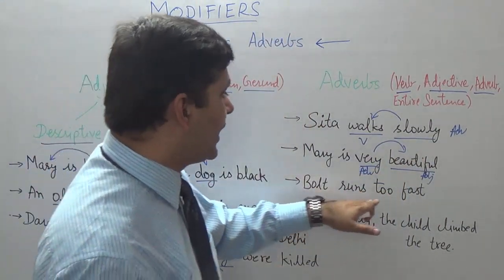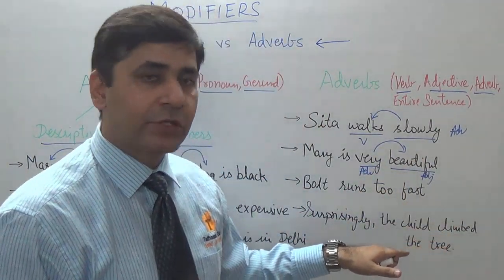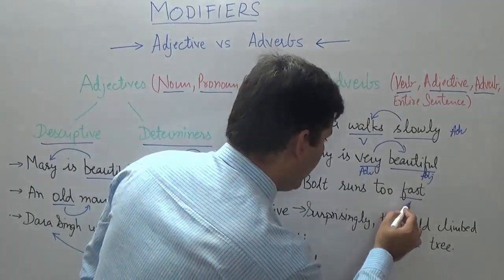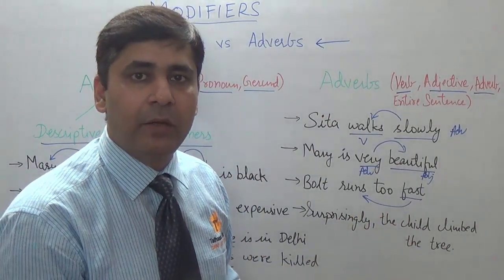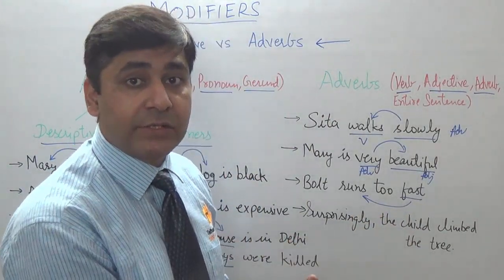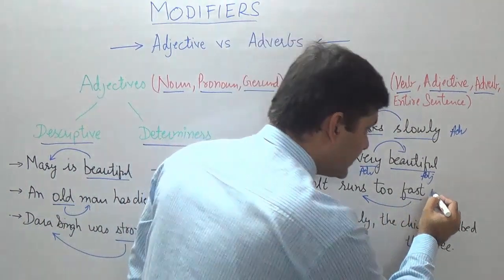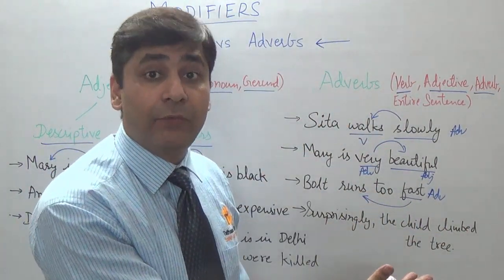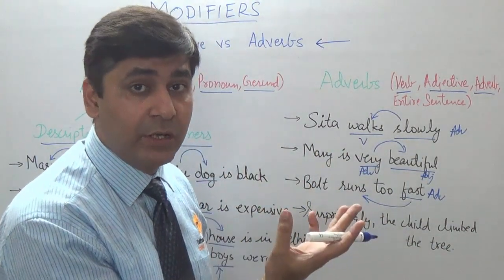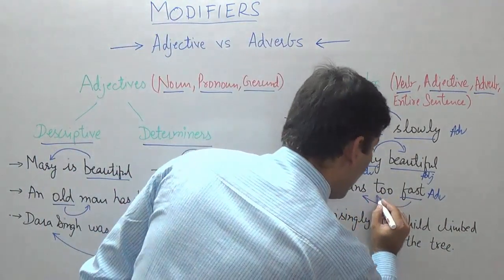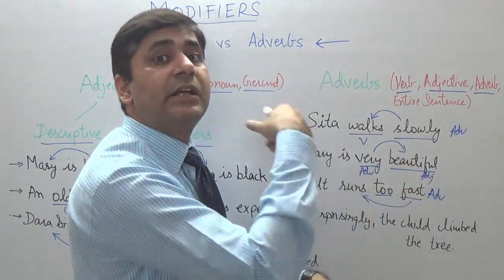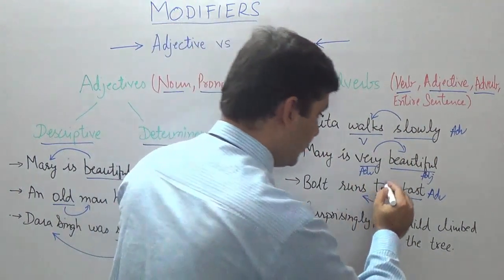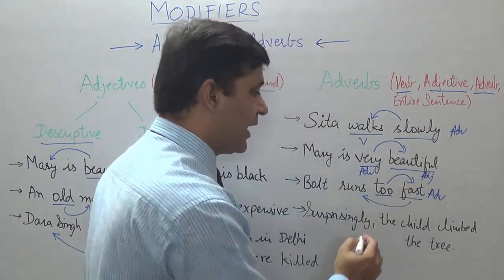Similarly, 'the board runs too fast.' Here 'fast' is a modifier for 'runs' — how the running is happening — so 'fast' is an adverb. And 'too' is telling you the degree of 'fast,' how much fast. Since a word that modifies an adverb is also an adverb, 'too' is also an adverb here.